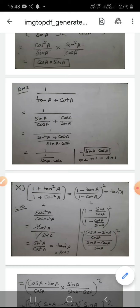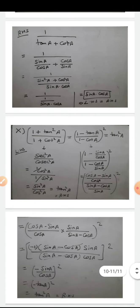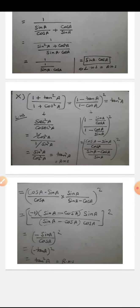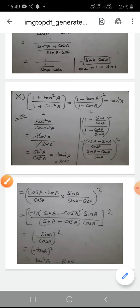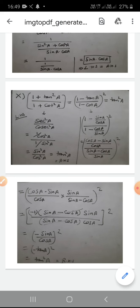For the second part: [(1 - tan A)/(1 - cot A)]². Writing tan A = sin A/cos A and cot A = cos A/sin A, then taking LCM: numerator becomes (cos A - sin A)/cos A and denominator becomes (sin A - cos A)/sin A. Multiplying by reciprocal: [(cos A - sin A)/cos A]·[sin A/(sin A - cos A)]. Taking minus common from (cos A - sin A) = -(sin A - cos A), so after cancellation we get -sin A/cos A = -tan A. Squaring: (-tan A)² = tan²A = RHS. LHS = RHS for Part 10.